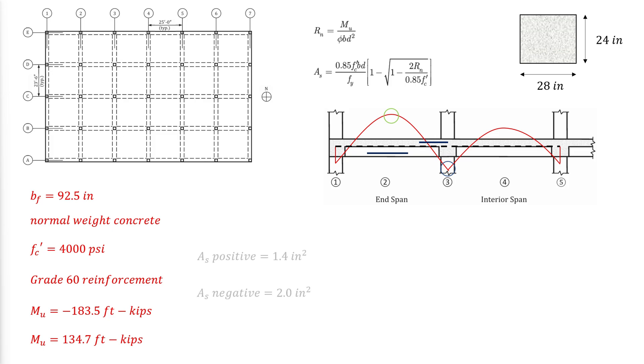The following flexural reinforcement areas are required for positive and negative moments. Now we need to check them against the minimum and maximum allowed flexural reinforcement areas according to ACI. It becomes evident that the minimum required by ACI governs for both cases.